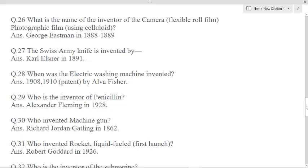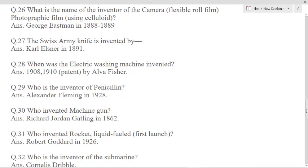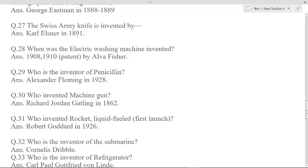The Swiss army knife is invented by Karl Elsener in 1891. When was the electric washing machine invented? 1908-1910, it is patent by Alva Fisher. Who is the inventor of penicillin? Alexander Fleming in 1928.